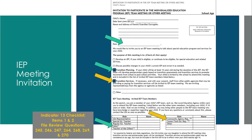The IEP, specifically the present education level section, must include input from all members of the IEP team — most importantly the student and his or her parents or family members. The student can only provide that input if they are invited to and actively engaged in the IEP process and meetings. The first step is to formally invite the student and parents or family members to the transition IEP meeting, and you must provide evidence that the student was invited.